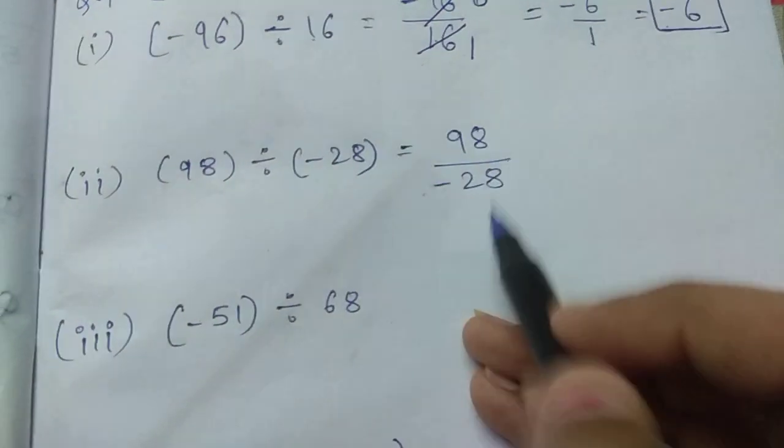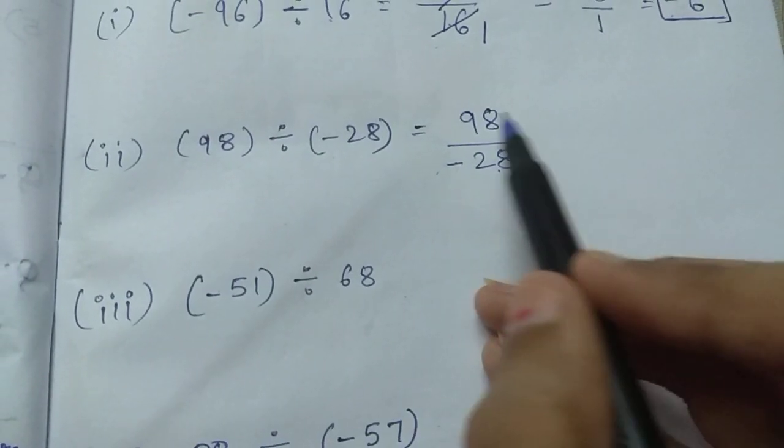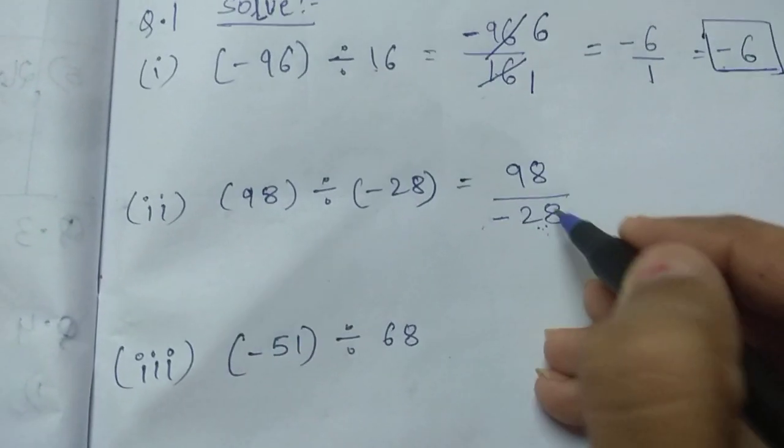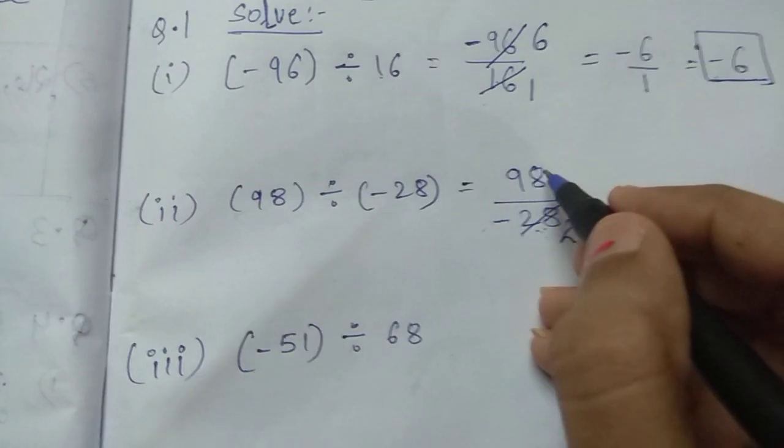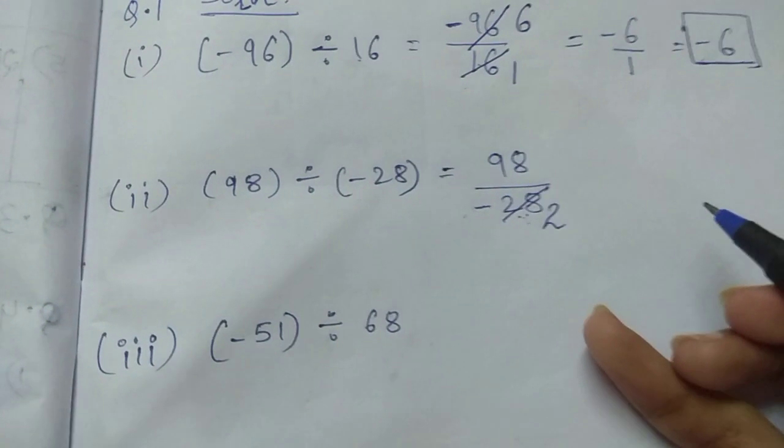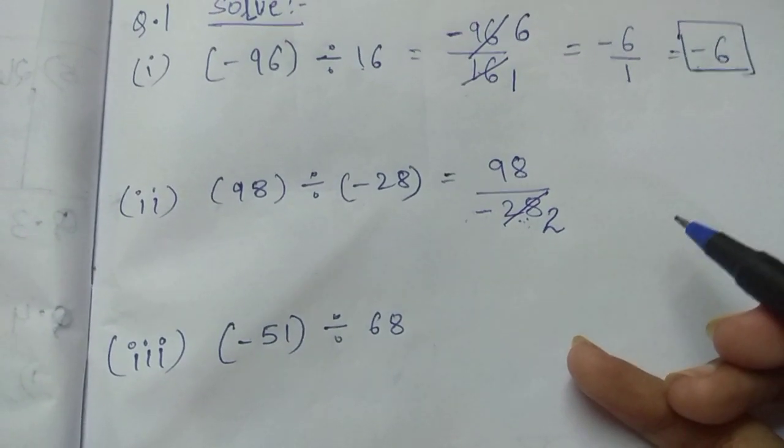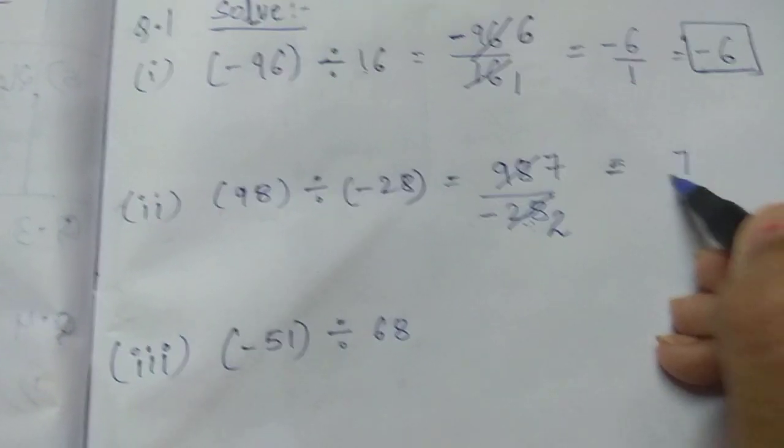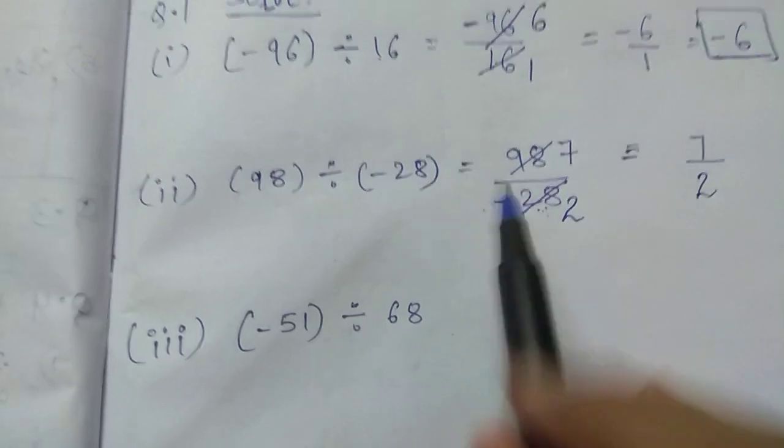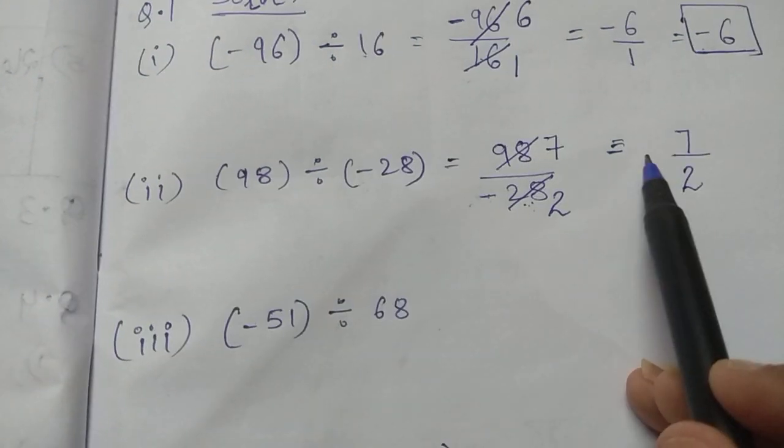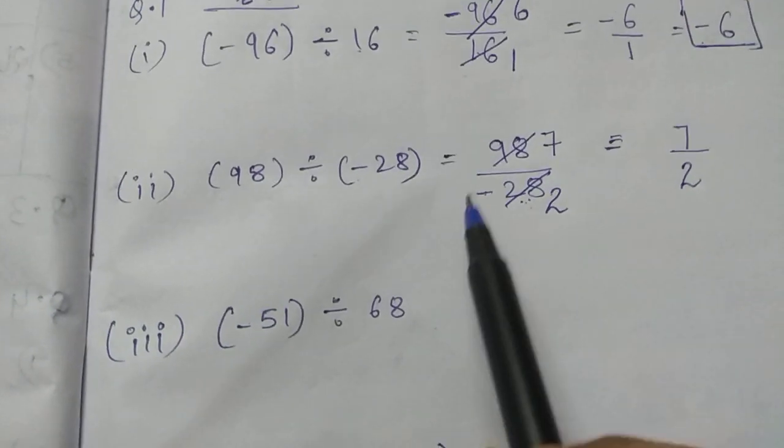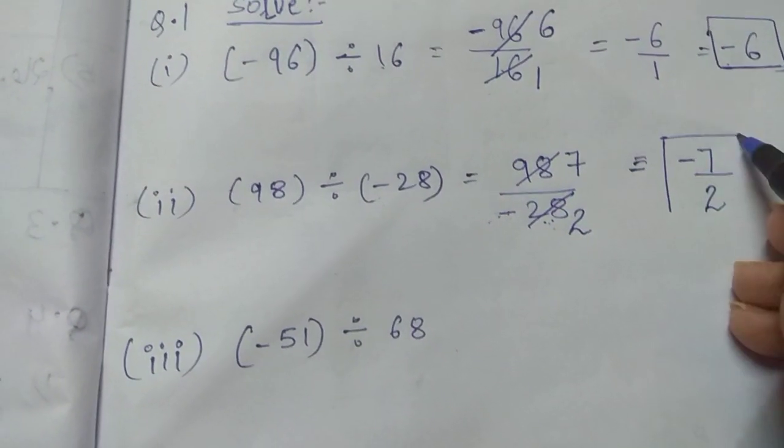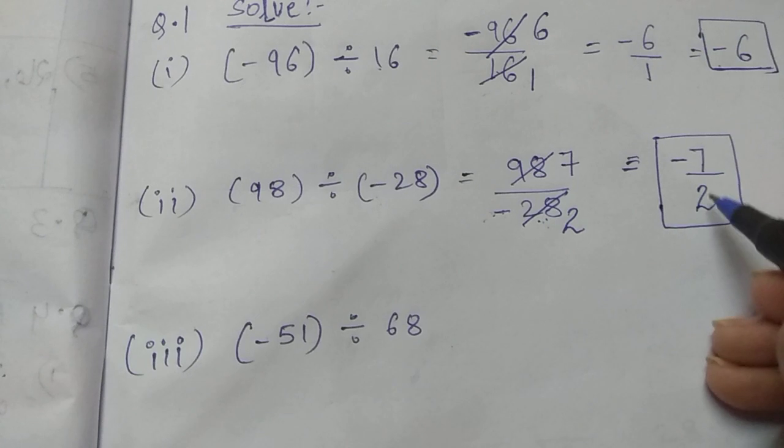So first let us see the cancellation part. 98 and 28. Both this number is divisible by 14. Yes. So 14, 2's are, and 14. Yes. Can you all tell me how many times 14? Yes. 14, 7's are. So, 7 upon 2. Now negative sign is there, because positive, negative, our final answer will be having negative number. So, never write negative sign in denominator, so I am putting negative sign in numerator. Now, this is our final answer. We cannot divide 7 upon 2 further.